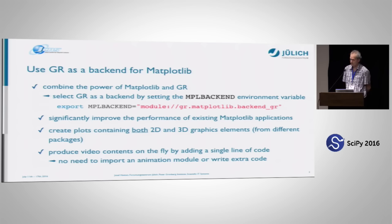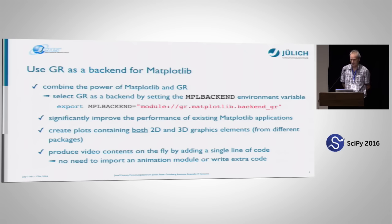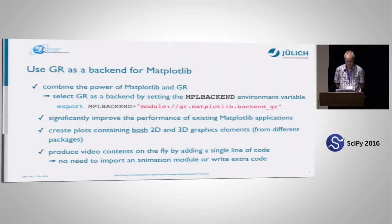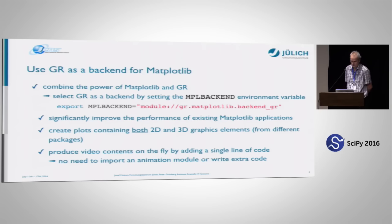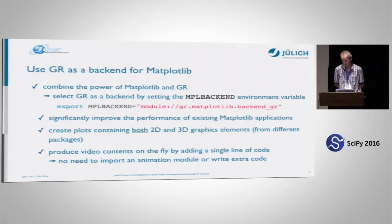Let's first start with GR as a backend for Matplotlib. You can combine the power of Matplotlib and GR, so you can mix Matplotlib commands with commands specific to the GR framework. Since version 1.5, you can simply define an environment variable and switch to our backend if it's installed. This will significantly improve the performance of your Matplotlib applications, especially if you are producing lots of output — for example, PDF, PNG, SVG. You can create plots containing both two- and three-dimensional graphics elements from different packages, mixing Matplotlib, GR, and probably others.